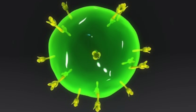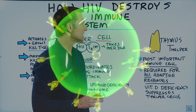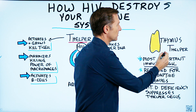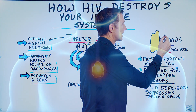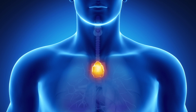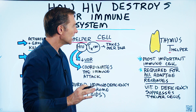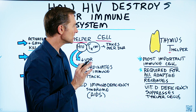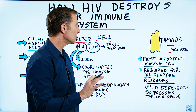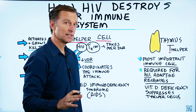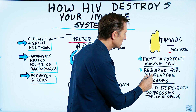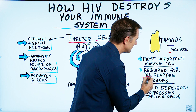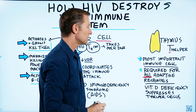The T helper cell is one of the T cells. It stands for thymus, because it actually gets its training in the thymus gland. The T helper cell is the most important immune cell because it is required for all adaptive responses.